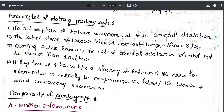The principles of plotting the partograph: the active phase of labor commences at 4 cm cervical dilatation. The latent phase of labor should not last longer than 8 hours. During the active phase of dilatation, the rate of cervical dilatation should not be lower than 1 cm per hour.